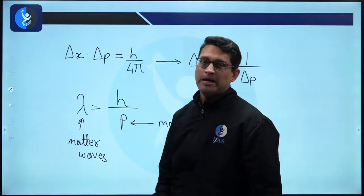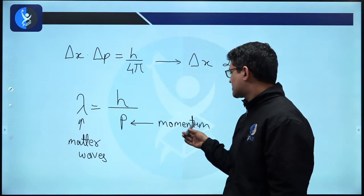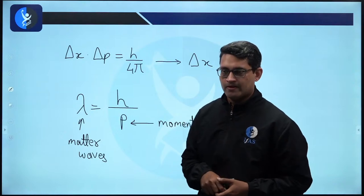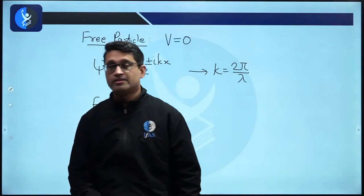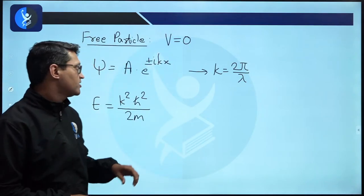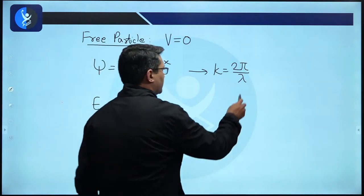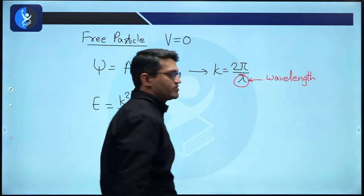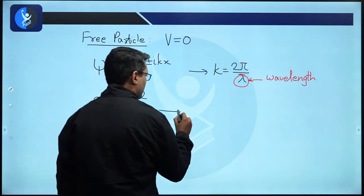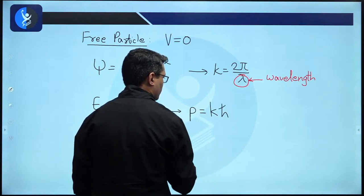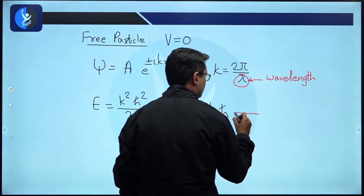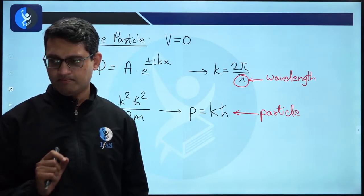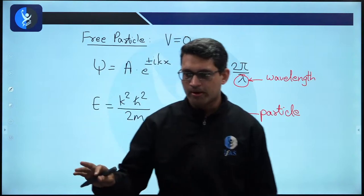The free particle shows wave-particle duality — it has wavelength lambda (matter waves) and momentum K times h-cross. This particle-like system has a momentum, so it behaves as a particle. The energies of the free particle system form a continuum, as Nisha correctly pointed out.